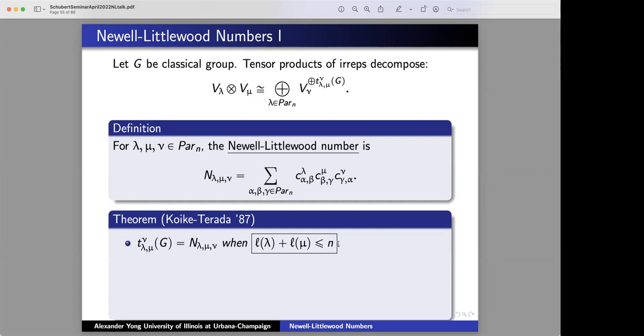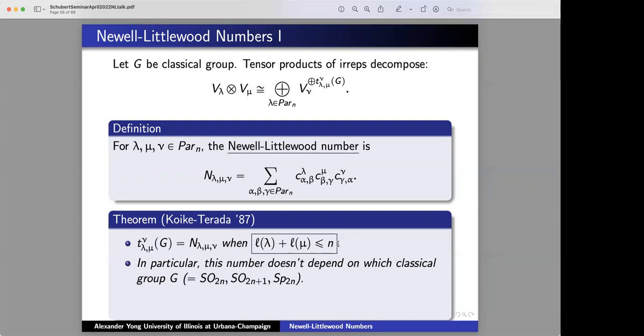An immediate corollary of this, which is rather fantastic, is that therefore, in the stable range, these numbers do not care which classical group you're working with, which is very odd, because in general, these tensor problem multiplicities definitely will care which classical group you're working with. They're all, in fact, equal to this Newell-Littlewood number.